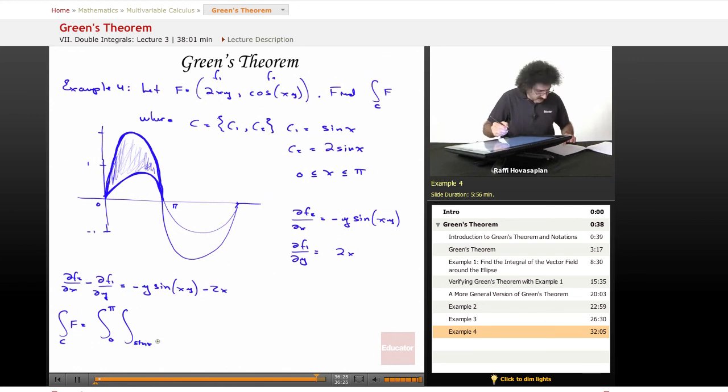sine of x and 2 sine x. We have minus y times the sine of xy minus 2x. That is our integrand, and then we have dy dx.